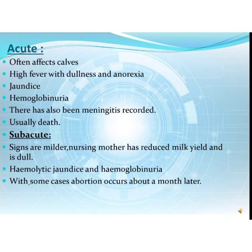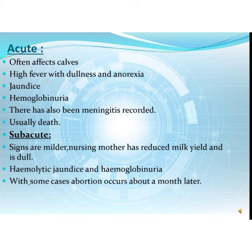In acute cases, it often affects calves. Cows may show high fever with dullness and anorexia, jaundice, and hemoglobinuria. Meningitis has also been recorded, and death may occur. In sub-acute cases, signs are milder. Nursing mothers have reduced milk yield and become dull. Hemolytic jaundice and hemoglobinuria may also be seen. In some cases, abortion occurs about a month later.